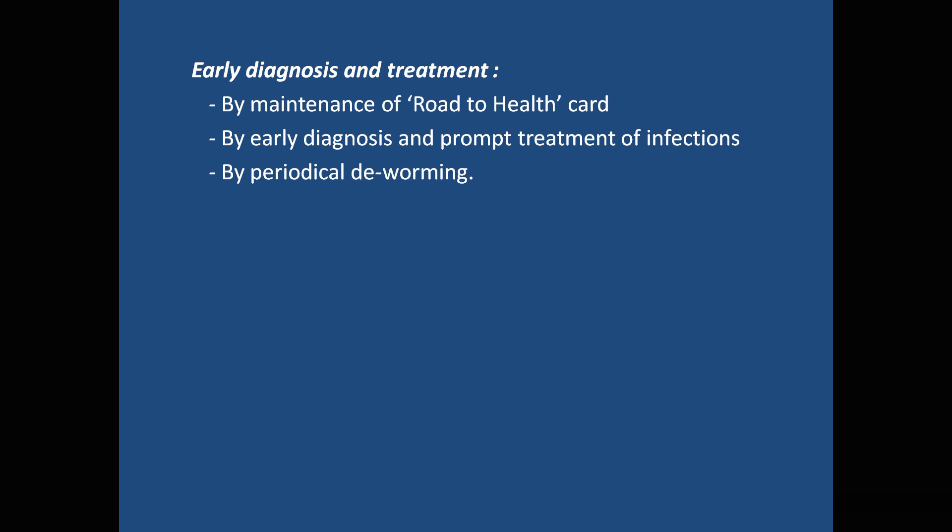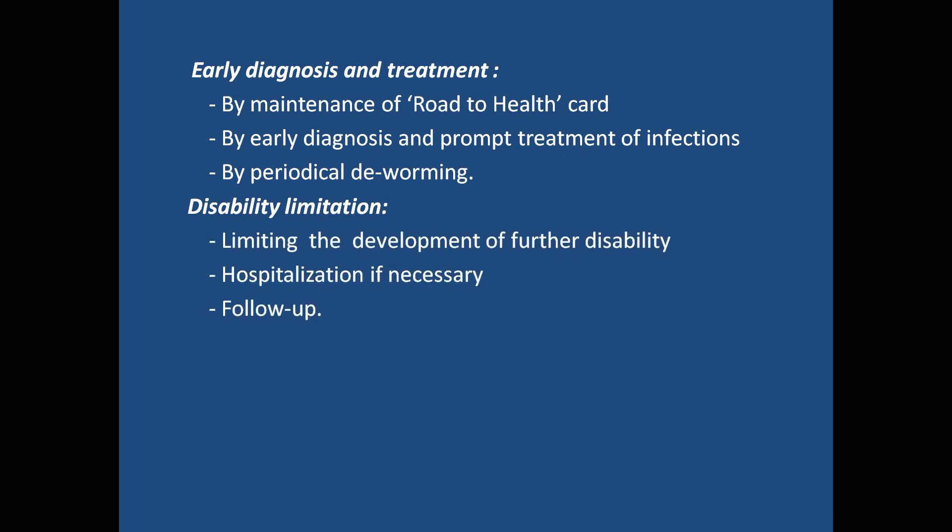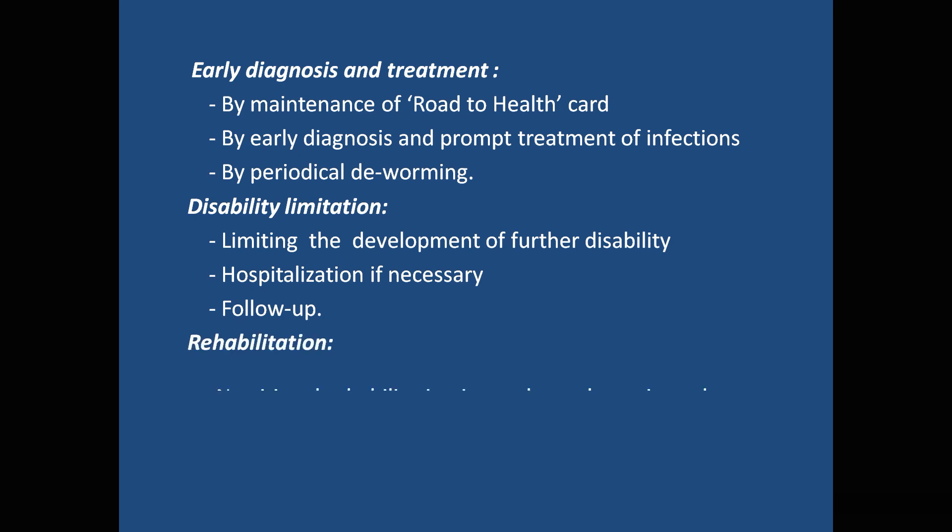Secondary prevention involves early diagnosis — achieved by monitoring child growth using a Road to Health or growth chart card — followed by proper treatment of the condition, addressing infections and other underlying issues, and periodic deworming. Disability limitation aims to prevent further deterioration if a child has developed severe malnutrition, by improving the child's nutritional condition and ensuring the child does not relapse into malnutrition again.